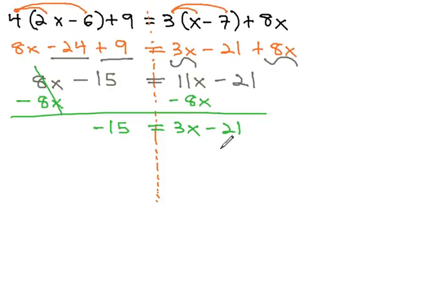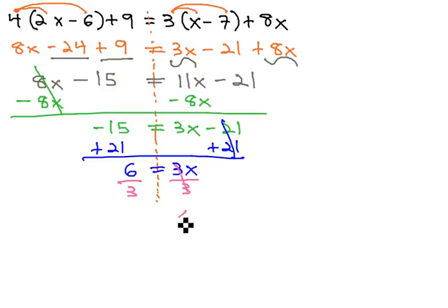It's a two-step equation. We can start moving things away from the x by first getting rid of the 21 negatives with 21 positives. When I do that, we get 6 equals 3x, and finally dividing both sides by 3 to get our final answer, x is equal to 2.